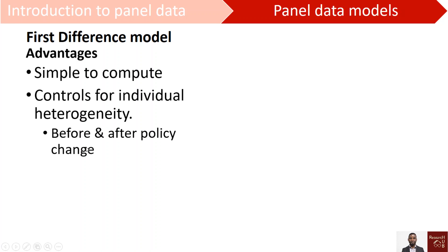So if there's any difference that is constant over time, it's able to control for that because u_i represents all the differences that are constant over time. We are also able to check a change in a policy, so before and after.